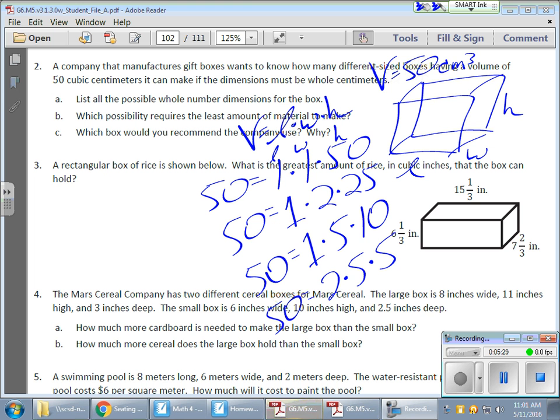Now, what I want here, it asks, let's see, it says list all the possible dimensions for the box. There they are. So, I have my lengths, and my widths, and I have my heights. There they are.